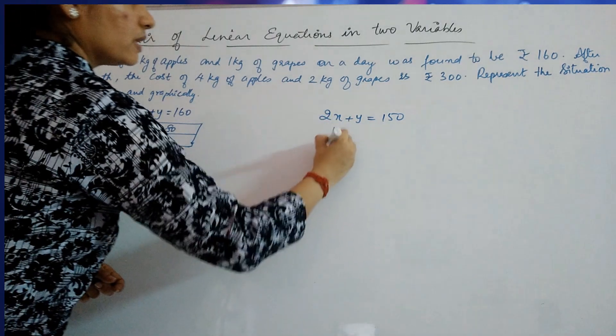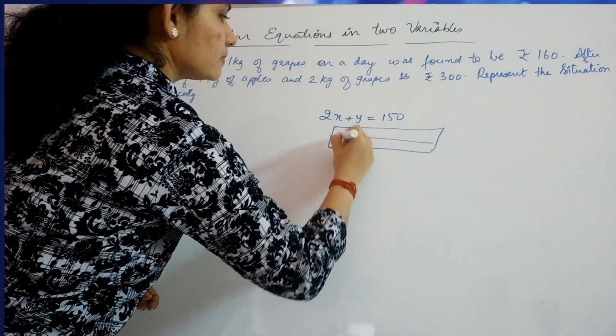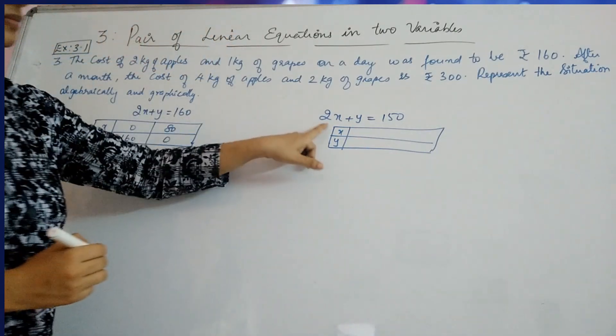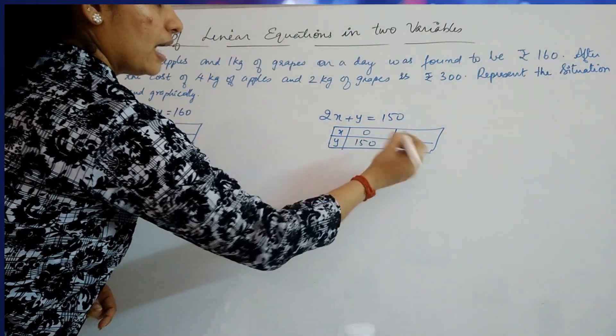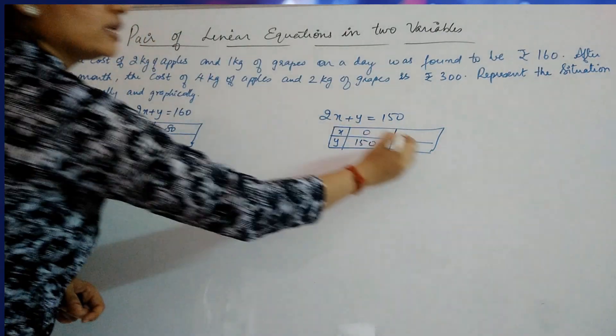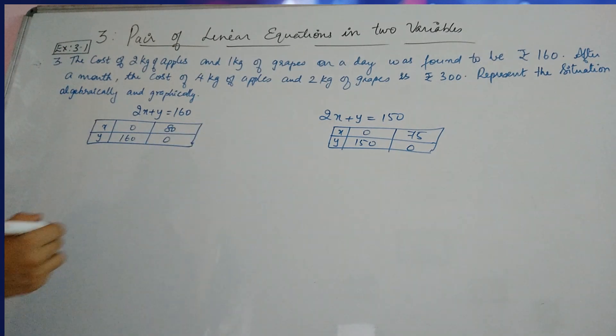And for the second one, if you are taking your X value as 0, you will get Y as 150. And Y value as 0 will give you your X value as 75. Now, we will draw the graph.